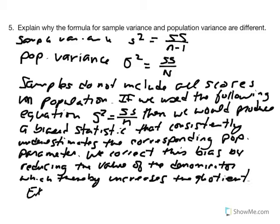When we increase our denominator by one value — wait, when we reduce the denominator by one — we increase the quotient. So mathematically, N minus 1 is allowing us to inflate that statistic so that it is a better representation of the population parameter. This addresses the bias that would be reflected if we calculated variance by dividing by N instead of N minus 1.